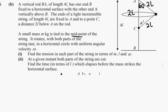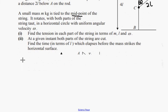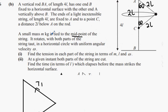Equilateral. So we're talking about 60s here, aren't we? Now, what can we say about the tensions? We're just going to break it up into T1 and T2. A small mass m kg is tied to the midpoint of the string. It rotates with both parts of the string.